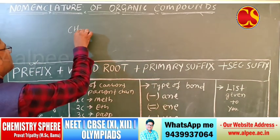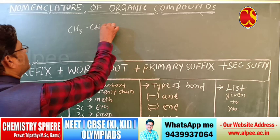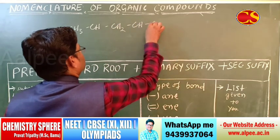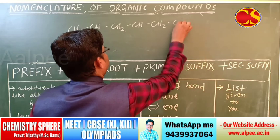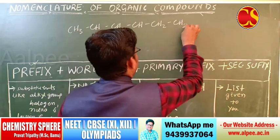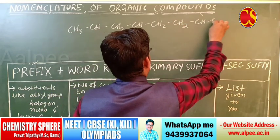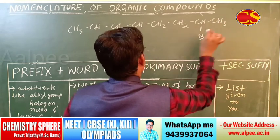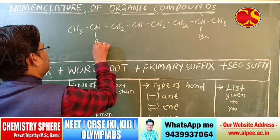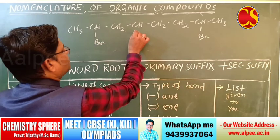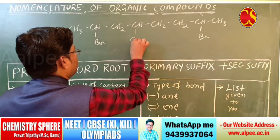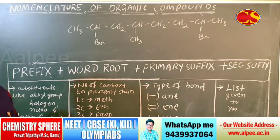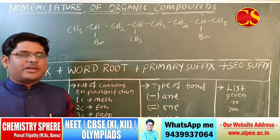Come to the example. The compound is: CH3, CH, CH2, and CH, CH2, CH2, CH, and CH3. This substituent is bromine, this is bromine, and this is methyl. So, how can you write the correct IUPAC nomenclature of this organic compound?